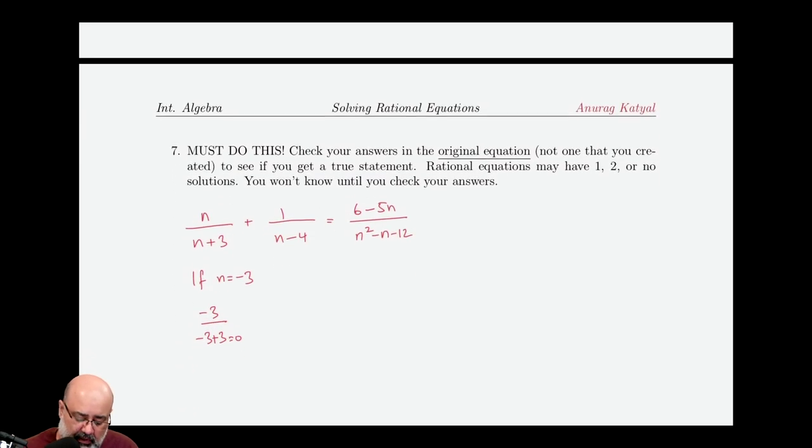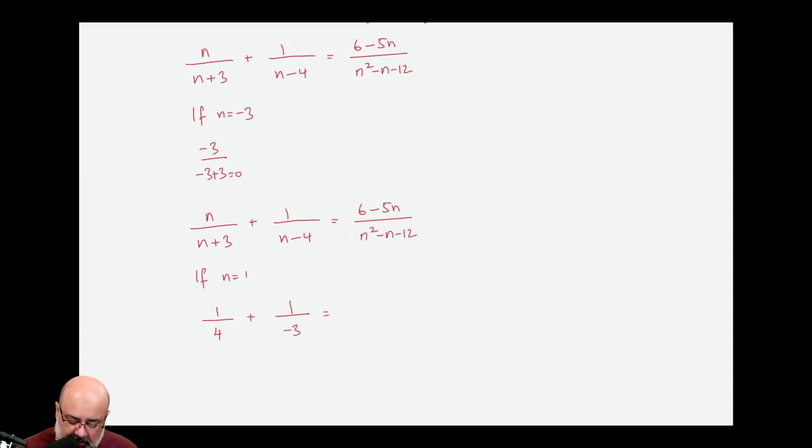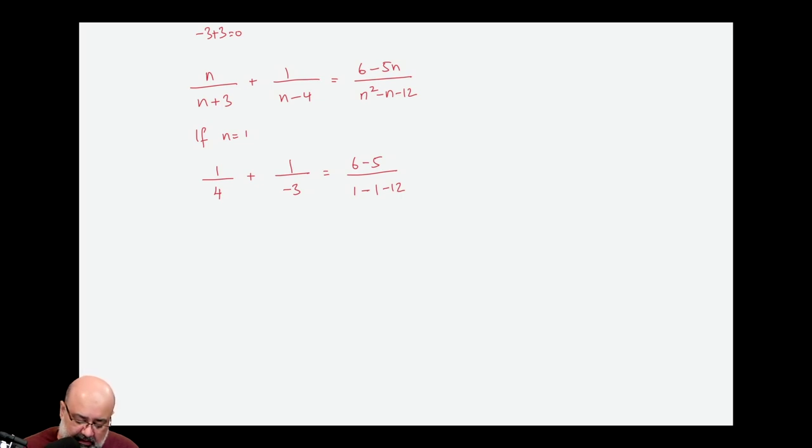Now we try n equals 1. So if n is equal to 1, the equation turns into 1 over 1 plus 3, which is 4, plus 1 over 1 minus 4, which is negative 3, equals 6 minus 5 times 1, which is 5, over 1 squared minus 1 minus 12. So this then becomes 1 fourth minus 1 third. This negative could just come up to the numerator, and then positive times a negative would be a negative, equals 6 minus 5 is 1 over 1 minus 1 minus 12, and then you're just left with negative 12, which is really the same as 1 fourth minus 1 third equals negative 1 over 12.